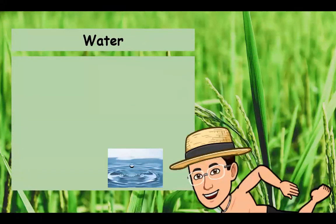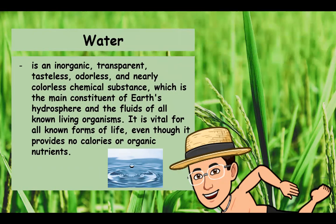The next factor that can affect the growth of plants is water. Water is an inorganic, transparent, tasteless, odorless, and nearly colorless chemical substance which is the main constituent of Earth's hydrosphere and the fluids of all known living organisms. It is vital for all known forms of life, even though it provides no calories or organic nutrients.